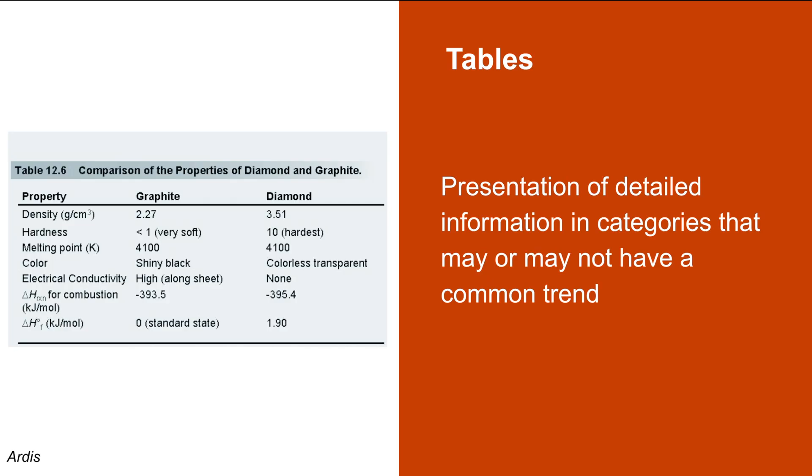The next category of visuals is tables. Tables present detailed information and categorize data with the help of rows and columns. The data presented in a table may or may not follow a statistical trend.